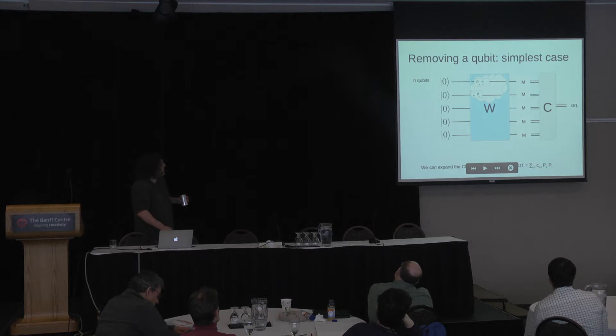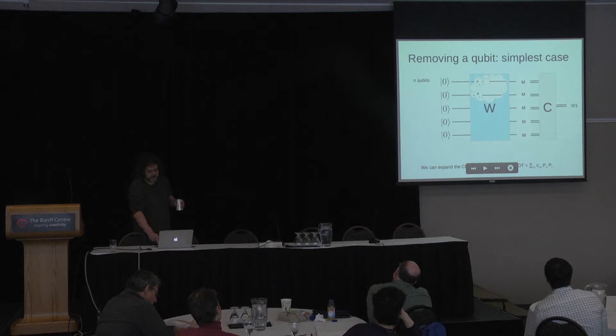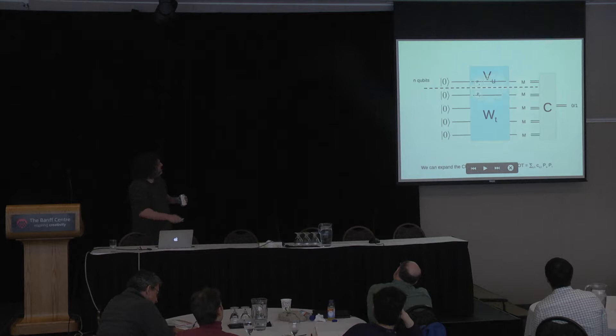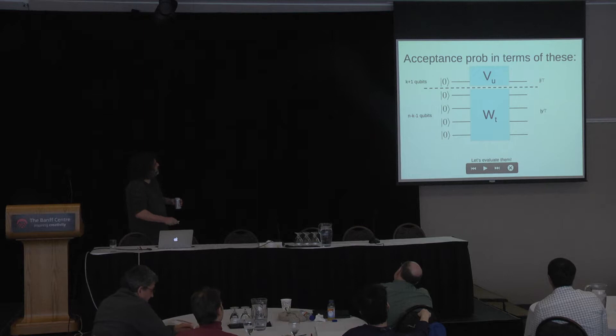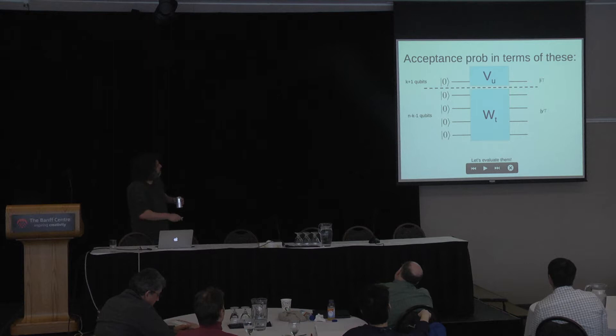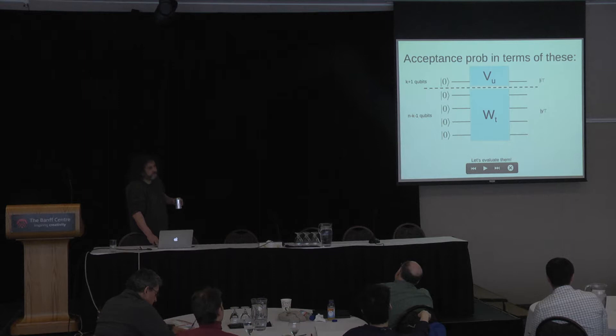We get a sum of terms with some Pauli here and some Pauli there. If we can evaluate all these branches with our quantum-classical hybrid computer, we get the answer we want. We peel off a qubit, replacing part of the circuit with a new circuit V acting on the small space, and a new circuit W acting on the big Hilbert space. We replace V with classical computing.